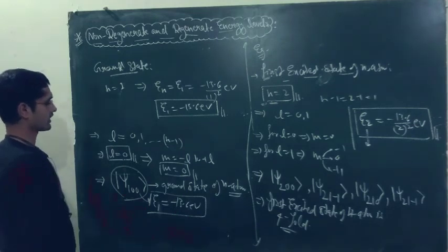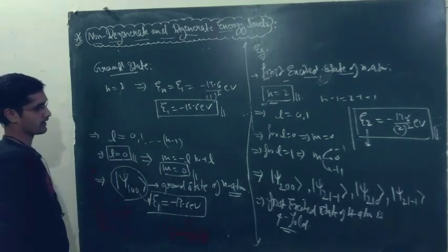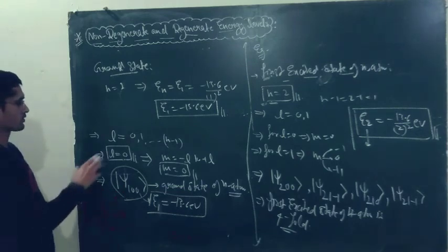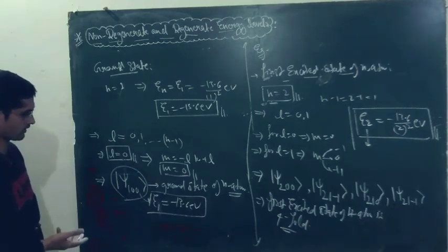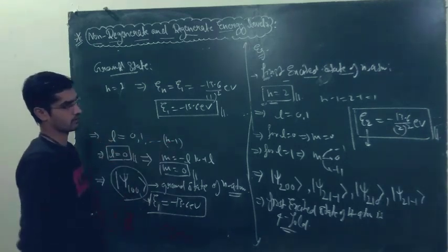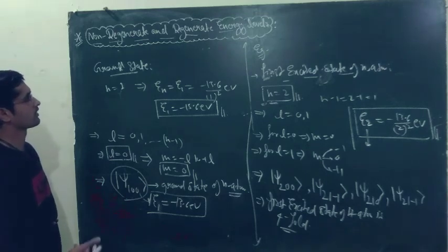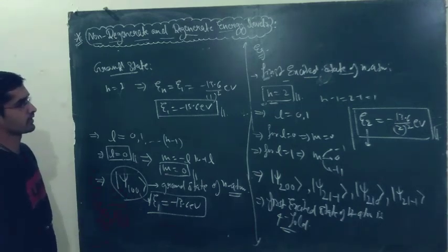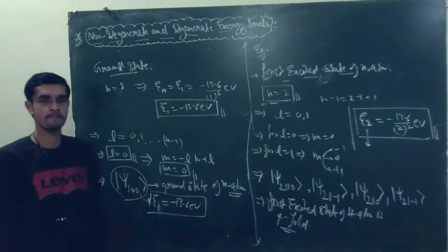So this is the meaning of degeneracy. If a particular energy level has just one unique eigenstate, then it is a non-degenerate energy level. But if there are more than one eigenstates corresponding to the same energy, that energy level is called degenerate. When we develop time-independent perturbation theory, we have to develop it separately for non-degenerate and for degenerate energy levels, because these two theories do not work interchangeably. I will show you what is the main reason why we cannot use the non-degenerate theory for the degenerate case. Thank you.